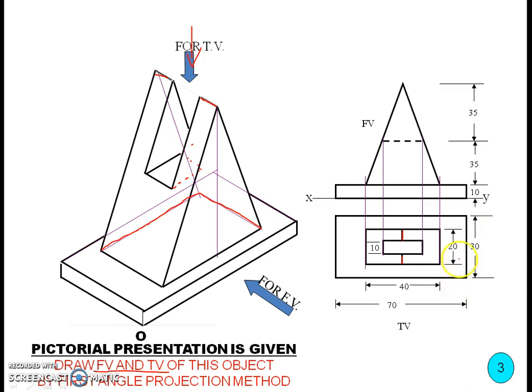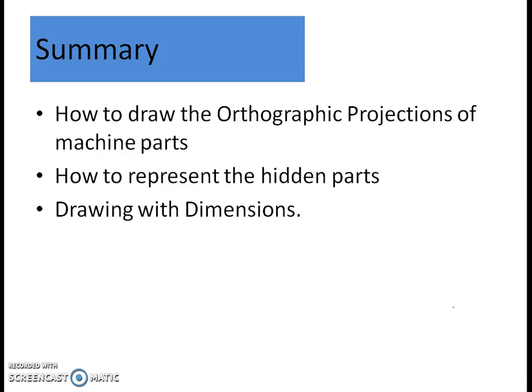If the dimensions are given, we have to draw all lines accordingly. This line should be 20 mm, this line 30 mm, this line 40 mm, and the total length of the part is 70 mm. We have to follow those dimensions exactly. This is today's session — now we know how to draw orthographic projections of machine parts, how to represent hidden parts using dashed lines, and how to draw orthographic projections with dimensions. Thank you.